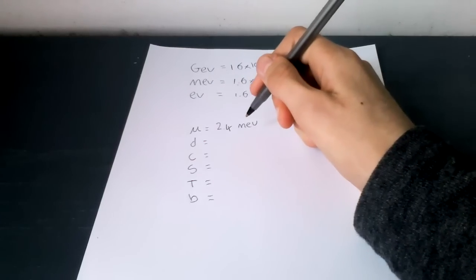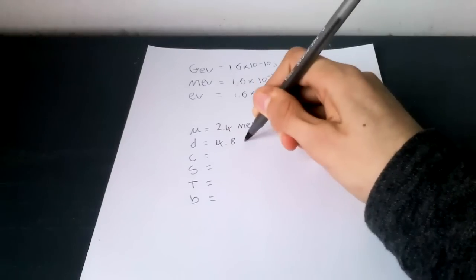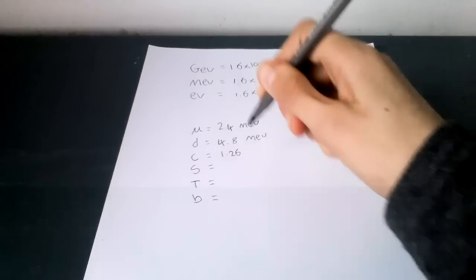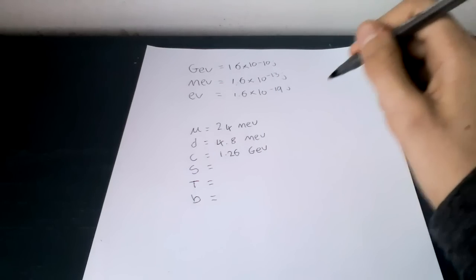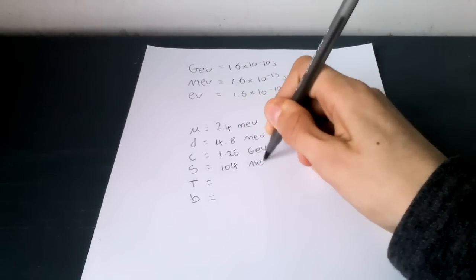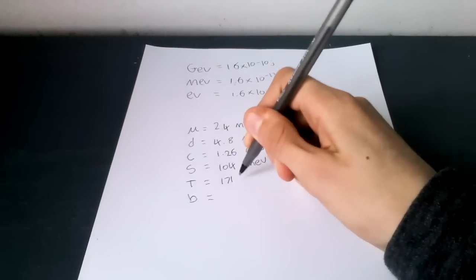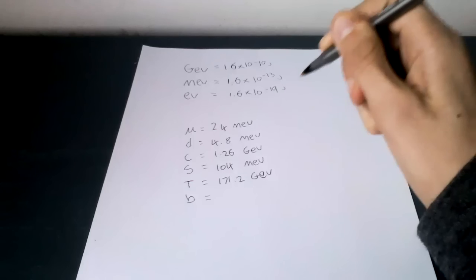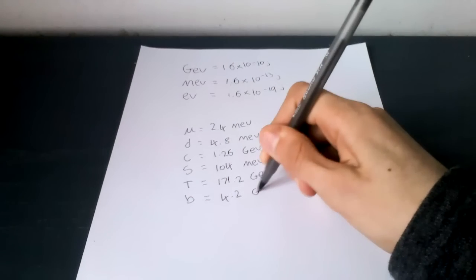The mass of the down quark is 4.8 MeV. The mass of the charm quark is 1.26 GeV. The mass of the strange quark is 104 MeV. The mass of the top quark is 171.2 GeV. And the mass of the bottom quark is 4.2 GeV.